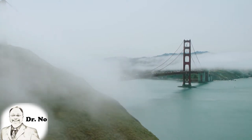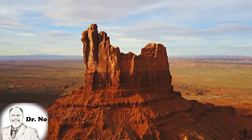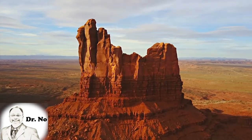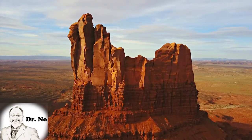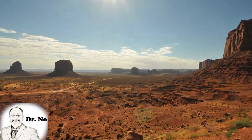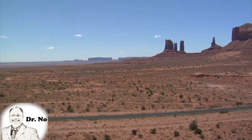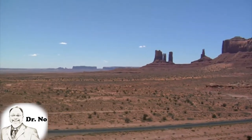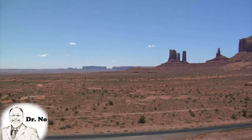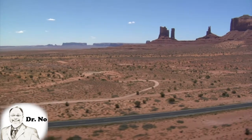Continental tropical air masses are hot and dry. They originate from Mexico and the southwestern United States and only impact U.S. weather during the summertime. While continental tropical air is unstable, it tends to remain cloudless due to its extremely low humidity content. If a continental tropical air mass lingers over a region for any period of time, a severe drought can occur.